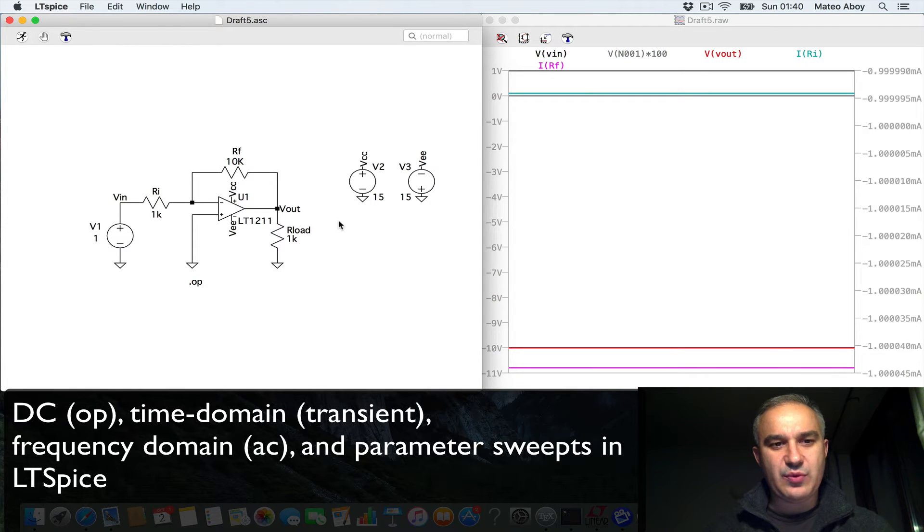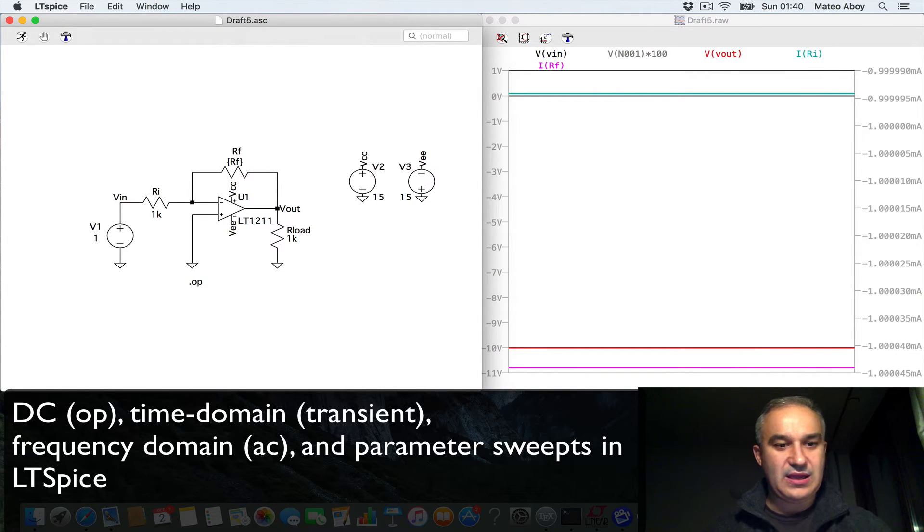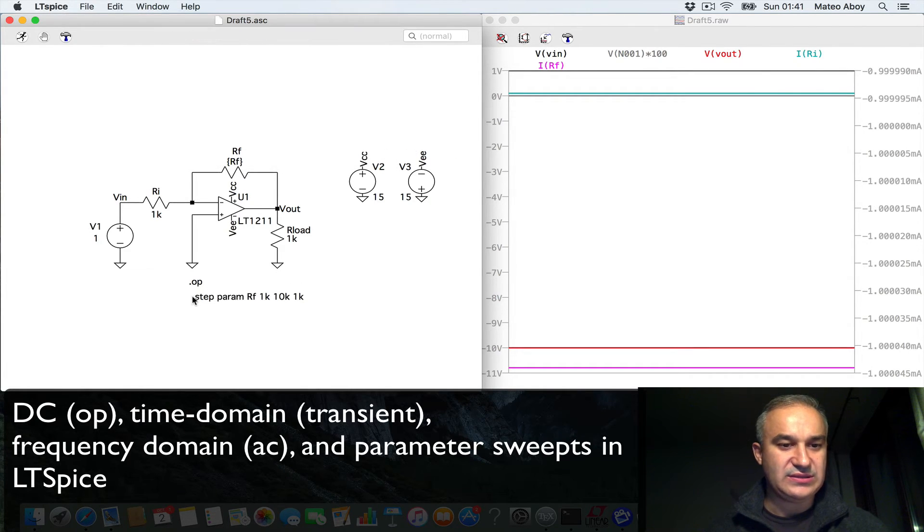Let's go ahead and imagine that we wanted to explore what happens as we change RF. Imagine that we want to say, how will this change for RF equals 1, 2, 3, 4, all the way to 10K. You can define the variable RF in brackets, and then use the SPICE directive, .step param, the name of the variable that you define, RF in this case, initial value 1K, final value 10K, and the step 1K. Let's go ahead and do this and run the simulation.